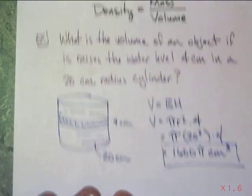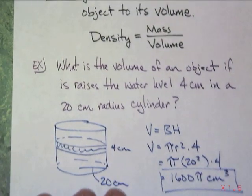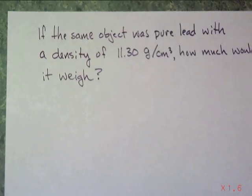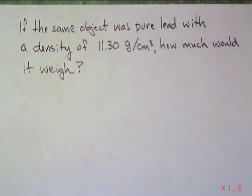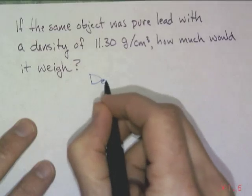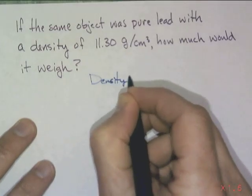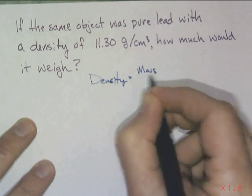Alright? Now, if that same object was pure lead with a density of 11.30 grams per centimeter cubed, how much would it weigh? Okay. So this takes it apart with density. So now we have to use our other formula, where density is equal to mass divided by volume.